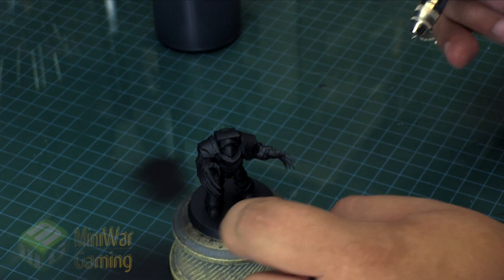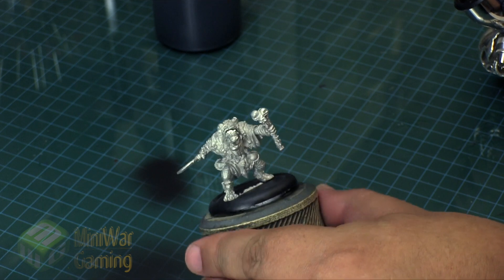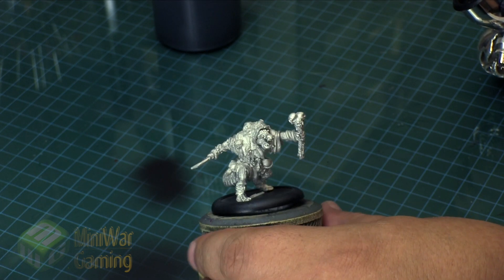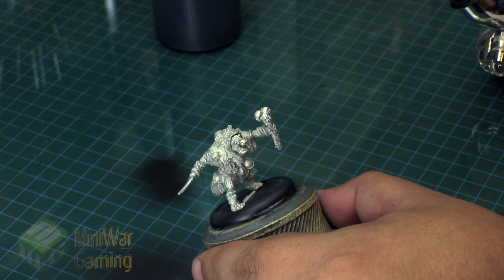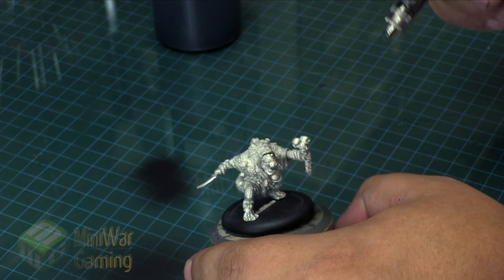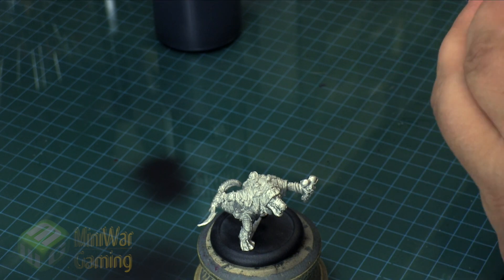Another quick example here we'll look at is a metal model. This other model here is a Pureblood witch doctor from the Hordes game. Again, same thing as before - I work brush up and down. I even have my cap on this time, we don't really need a cap on.